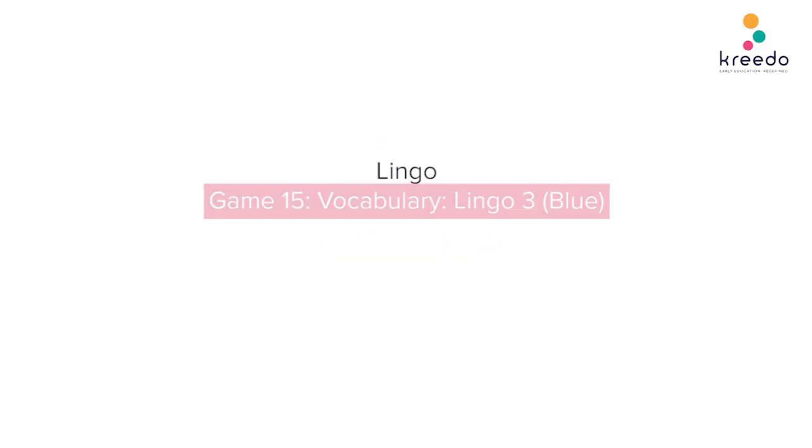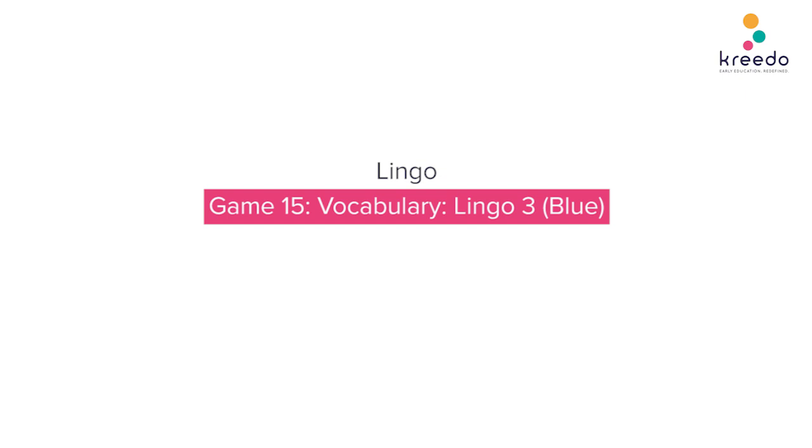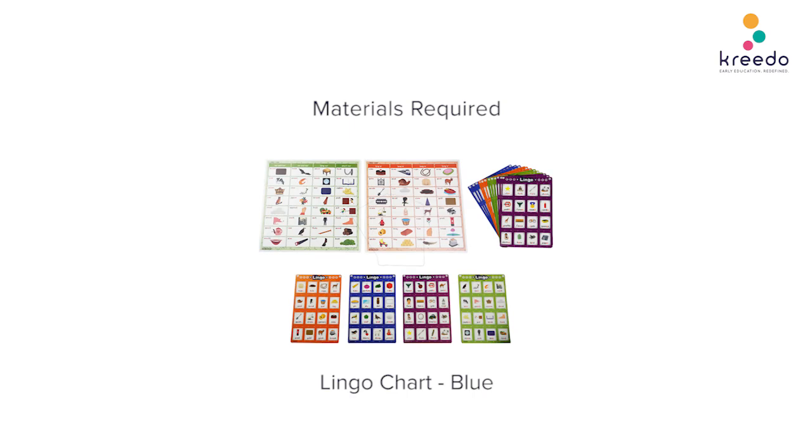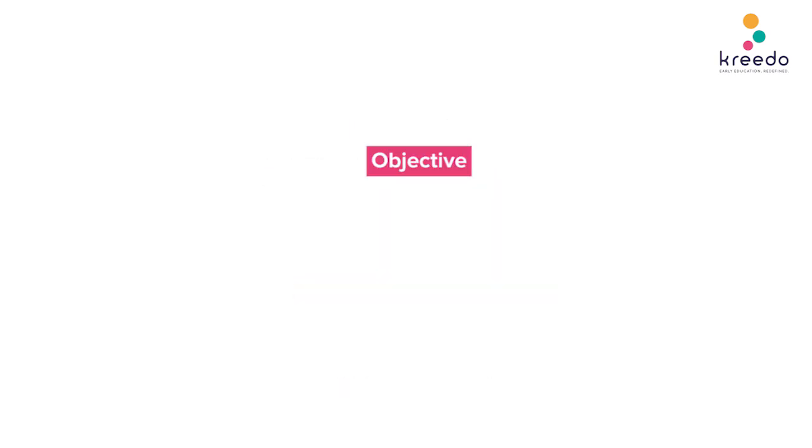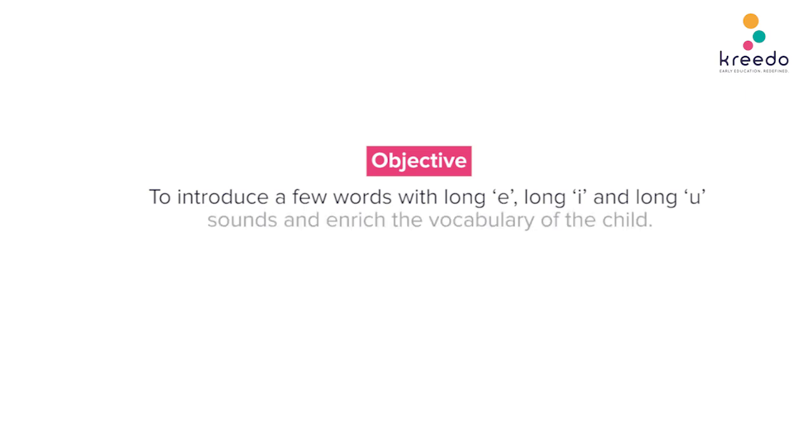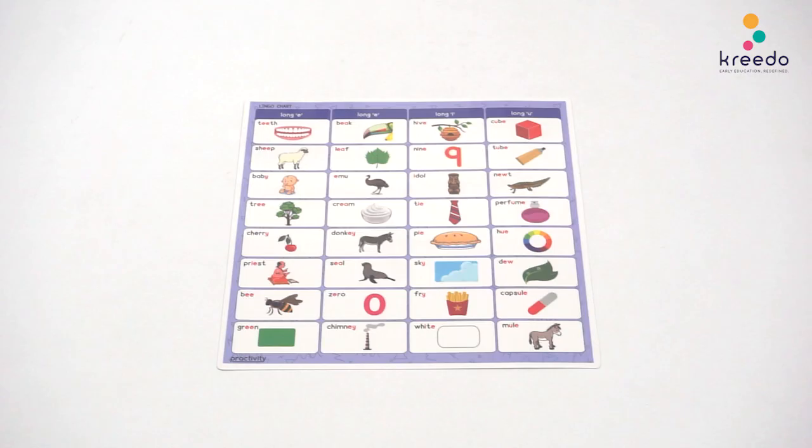Lingo Game 15 Vocabulary Lingo 3 Blue. Material required: Lingo Chart Blue. Objective: To introduce a few words with long E, long I and long U sounds and enrich the vocabulary of the child. Procedure: This is a name lesson.